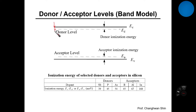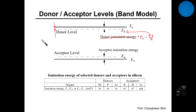Why is that? We need to think about how come the donor energy level is positioned very close to the conduction band edge. As described here, the donor's ionization energy can be described as E sub C minus E sub D, where E sub D indicates the donor's energy level. The y-axis indicates the energy of electron. The first question is: why do we use a dotted line instead of a solid line to indicate the donor's energy level?